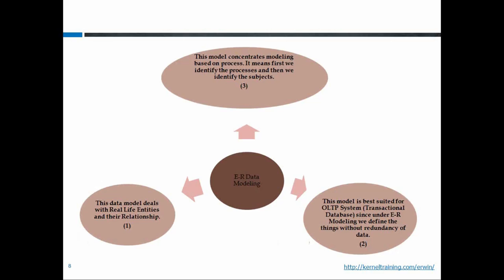For example, customer, product, location, country, city, and state are all nouns — these are master entities. Sales, dispatch, payment, receipt, return, deposit, and withdrawal are all verbs — these are transaction entities. Without domain knowledge, using English grammar you can identify about 60–70% of entities correctly, but the remaining 20–30% requires domain knowledge. You don't need to be an expert in every domain — your company will assign a functional expert to clarify doubts during the project.